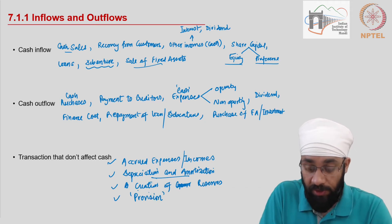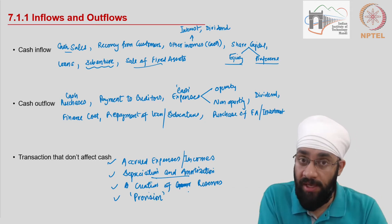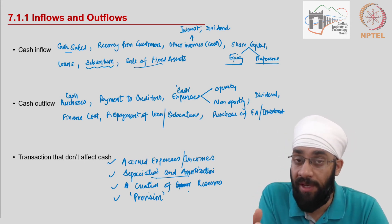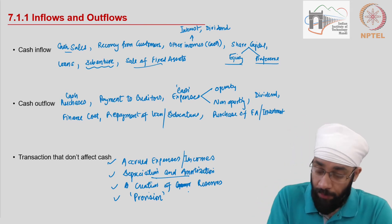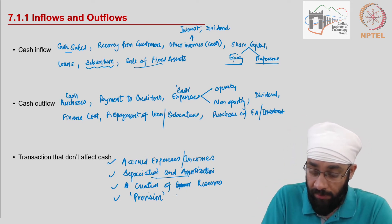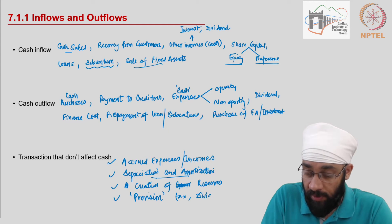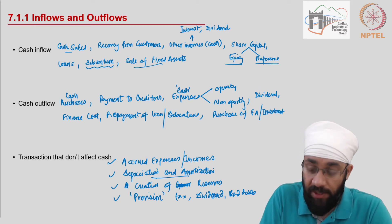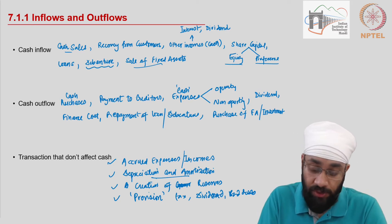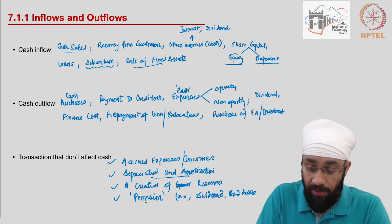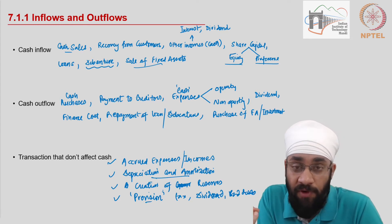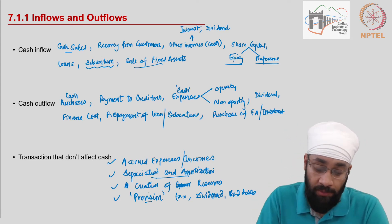There is also provision — a kind of specific reserve created to meet possible liabilities in the short term. Provisions could be for payment of tax, payment of dividend, or bad debts. The purpose is to have the money when it is required. Any reserve created for a short-term, specific purpose is called a provision.